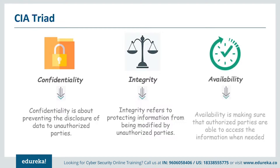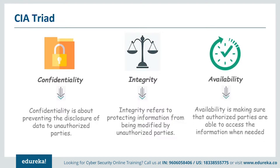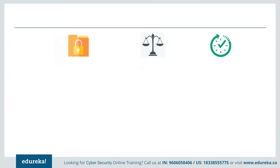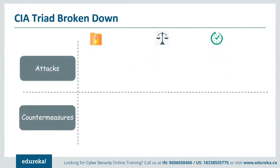The final component of the CIA triad is availability — the assurance that systems and data are accessible by authorized users whenever they need it. If we cannot access the data whenever we need it, we are definitely not secure. Now let's take a look at what kind of attacks can be made on the CIA triad in the real world and how we can mitigate them.